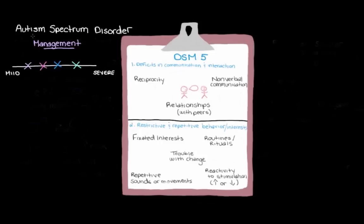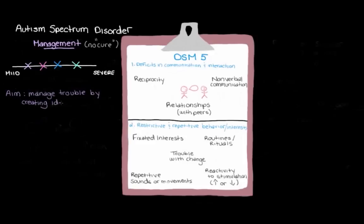You might have noticed I'm using the word 'manage' rather than 'treat,' and that's because there isn't really a cure for the troubles someone with autism spectrum disorder can experience. Instead, we focus on managing these troubles by trying to minimize how much they interfere with the person's day-to-day life. A big part of how we do that, especially when a child is younger, is getting parents, other family members, and teachers involved in creating an ideal environment for the child — one that addresses the different troubles someone with ASD can have.